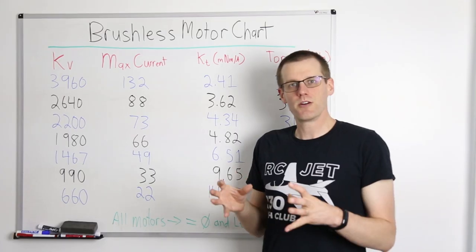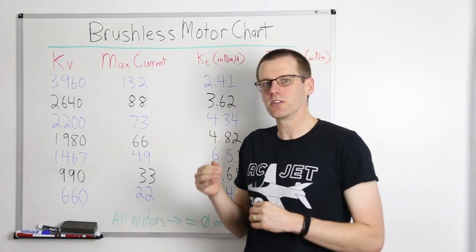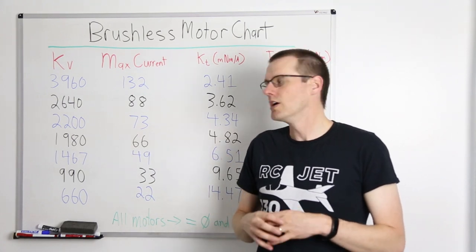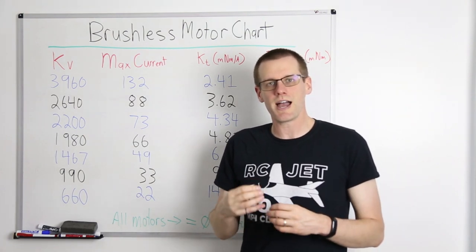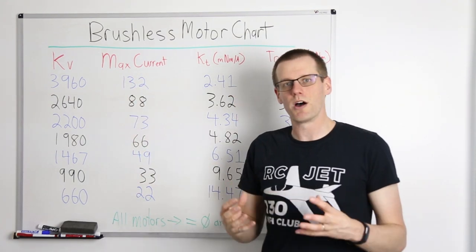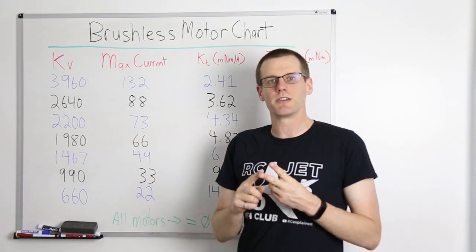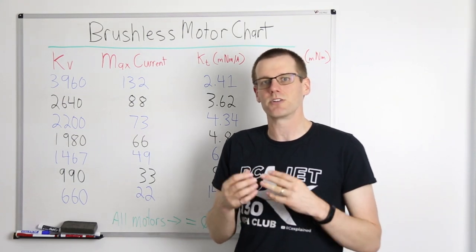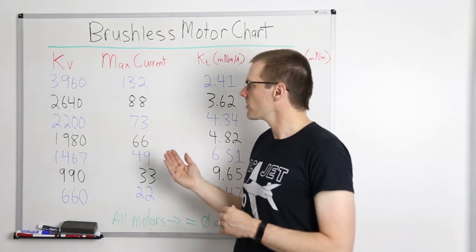Now let's head over to the whiteboard and go through specific specifications from a motor manufacturer's spec sheet. All the different motors we're looking at have the same diameter and same length of can, and they all come from the same manufacturer. The only thing that changes is the wind that has been selected.